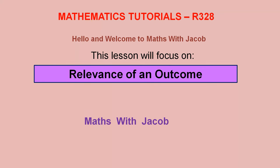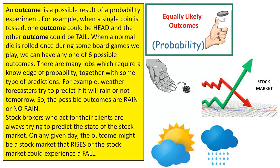Hello and welcome to Maths with Jacob. This lesson will focus on relevance of an outcome. An outcome is a possible result of a probability experiment.